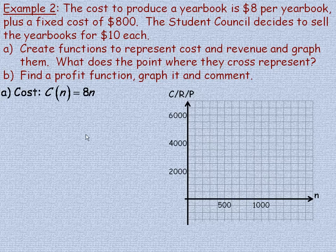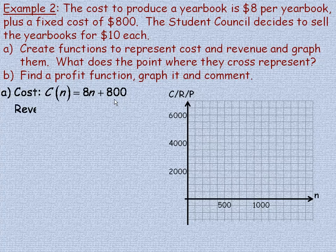For the cost function, the cost is $8 multiplied by the number of yearbooks. Letting N represent the number of yearbooks, that's 8 times N plus $800. The fixed $800 is there no matter if you're making 10 yearbooks or 1,000 yearbooks, so it's just 8N plus 800. The revenue function gives the student council $10 for each yearbook sold, so the revenue is 10N.